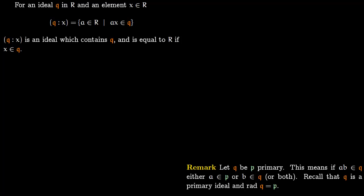In this lecture we want to talk about the first uniqueness theorem of primary decomposition. We start with a remark: let Q be P-primary, which means that if AB lies in Q, either A lies within P or B lies within Q, or both. Recall that Q being P-primary means Q is a primary ideal and the radical of Q is P, which is the underlying prime ideal. So P is prime.